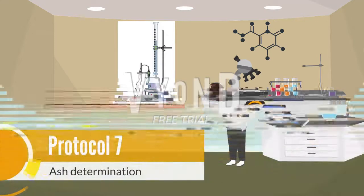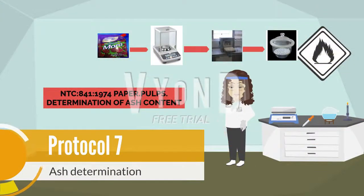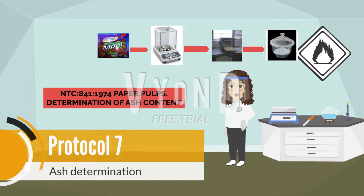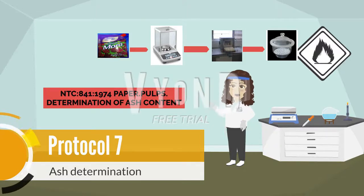Protocol seven is ash determination, which is necessary to analyze the sample because it determines the total mineral percentage in the food. The procedure is based on NTC 841. It is important to perform this test on the blackberry jam sample as it helps determine the purity of some ingredients used.